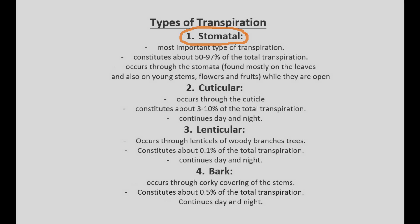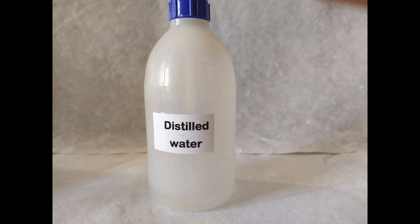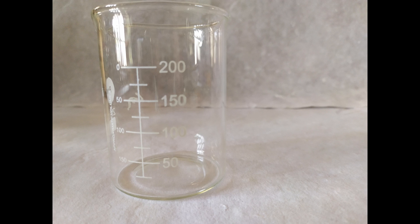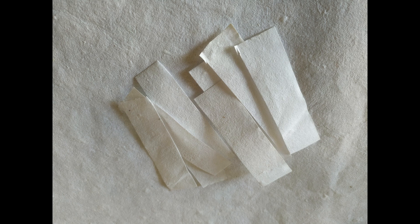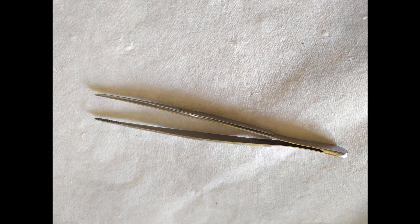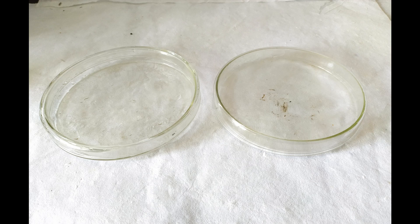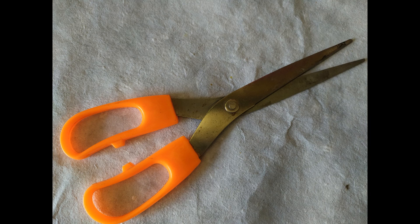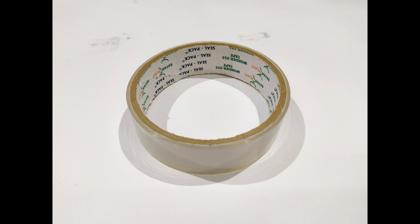For this experiment, we'll need the following: cobalt chloride, distilled water, a beaker, a stirring rod, filter paper strips, some forceps or tweezers, a bottle with a tight fitting cap, a petri dish, scissors, a pair of glass slides, and sticky tape or some paper clips.